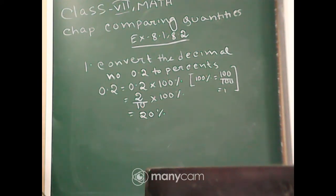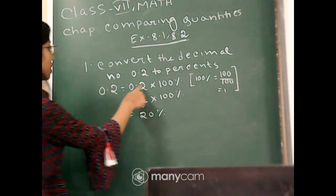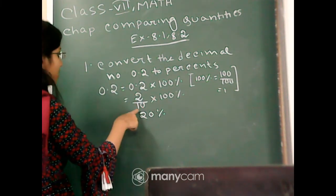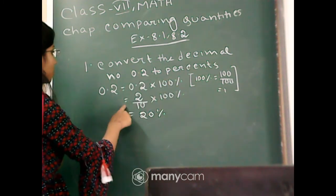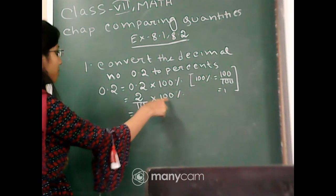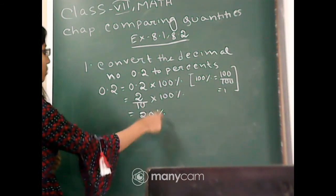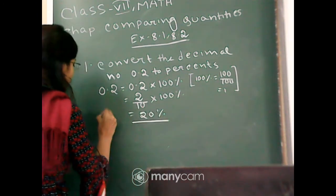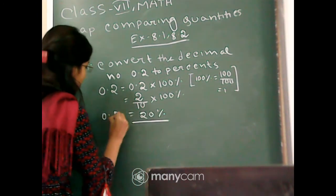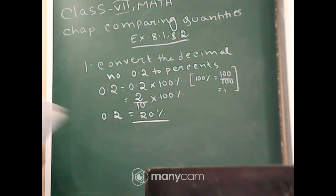I repeat: convert the decimal number 0.2. We can write 0.2 as 0.2 into 100 percentage. Now, 0.2 is equal to 2 divided by 10. So, 0.2 into 100 percentage is equal to 2 divided by 10 into 100 percentage, that is 20 percentage. So the answer is 20 percentage, that is 0.2 is equal to 20 percentage.